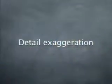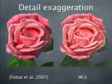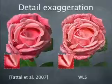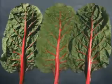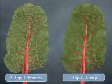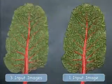Another application is detail exaggeration from the Fatale et al. paper, where the idea is to combine details from a collection of images taken under different light conditions to create a single image rich with details. Upon close inspection of the original Fatale et al. results, thin gradient reversal artifacts from over-sharpening are visible, which can be avoided by switching to weighted least-squares filtering. We also demonstrate that in some cases highly exaggerated detail can be generated from a single input image, rather than requiring three multi-light images as in the original work.